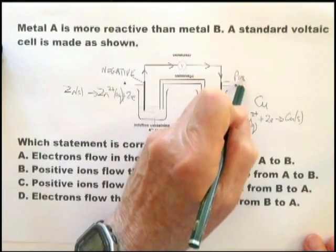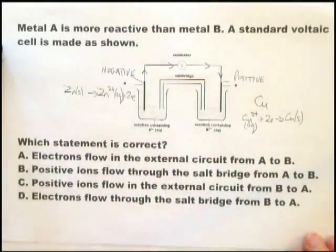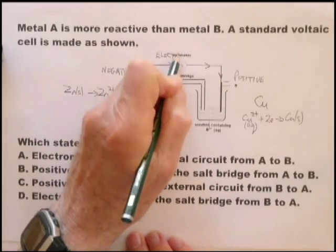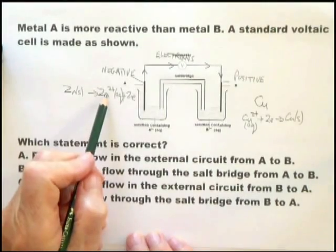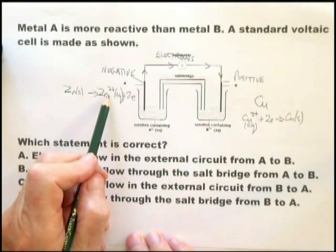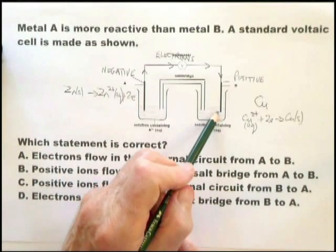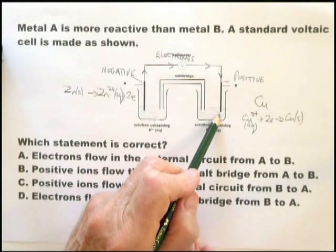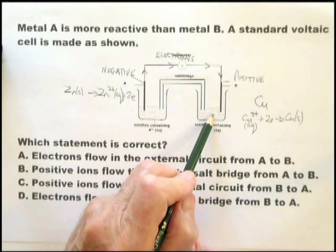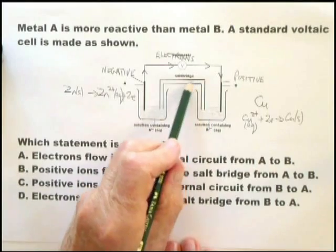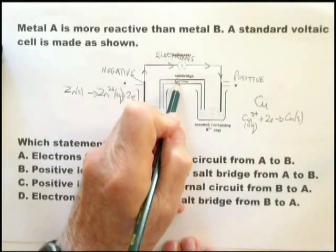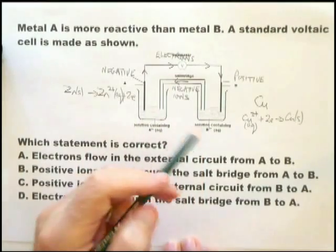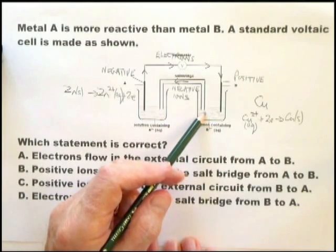First of all, this becomes the positive electrode. Next, as the electrons are moving in this direction, in this solution you are increasing the number of zinc ions, and in this solution you're reducing the number of copper ions. They're both positive, so in order to balance it, there must be a movement of negative ions from this solution up into the salt bridge and over into that solution. If that is copper sulfate, for example, those would be sulfate ions moving up there.